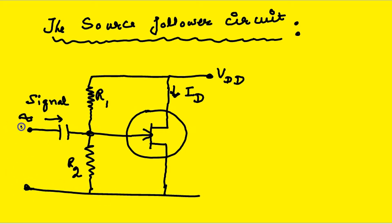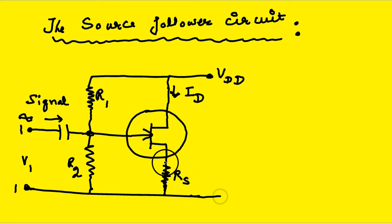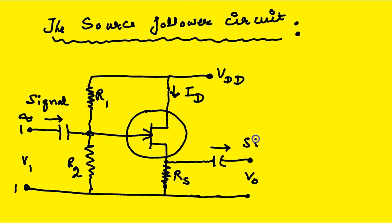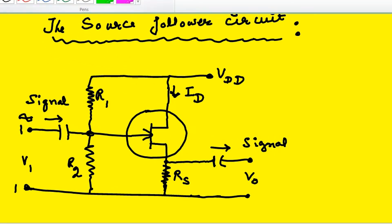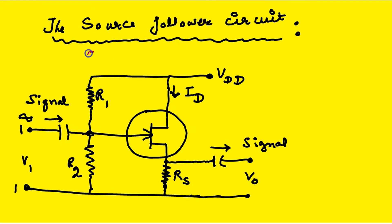This is port 1 and V1 is the input signal. The resistor RS is connected to the source, and the output is taken across RS. The output signal, which is the amplified signal, is taken out through a capacitor. This circuit is also sometimes called the common drain circuit.